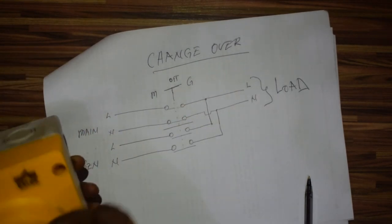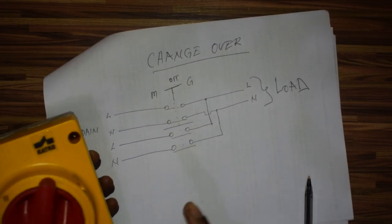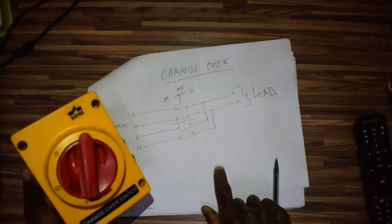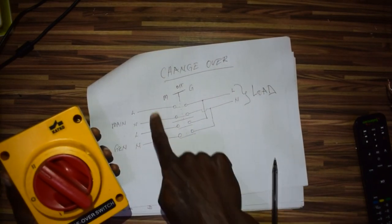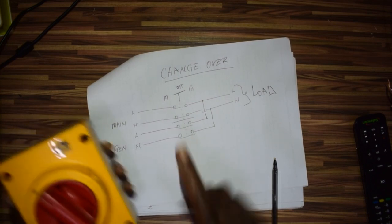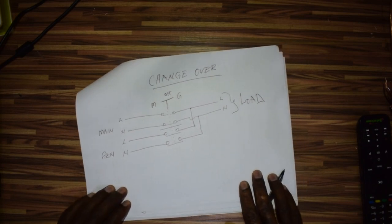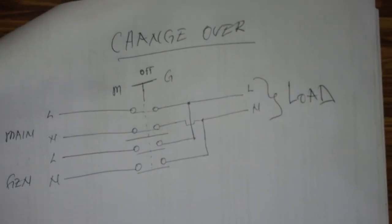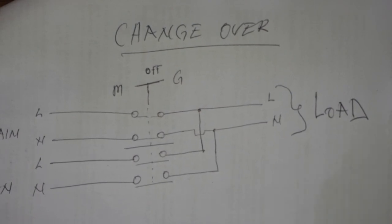When power goes, we put it to zero. We put it back to the main, and the gen comes in. We'll talk about the automatic changeover in detail perhaps in the next video, but for today we're on this one.